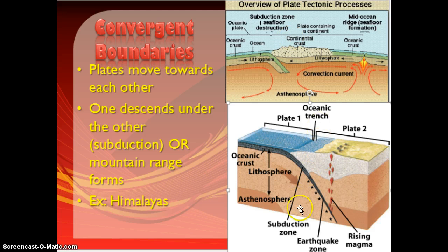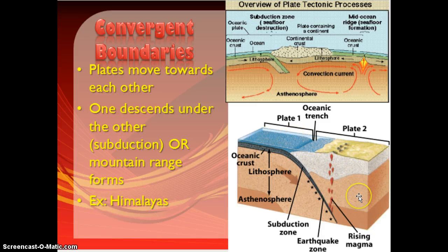Even at subduction zones, you still usually have mountain ranges pop up. You see this in places like the west coast of North America, where you have the Cascade Mountains along the California coast, and then a subduction zone right off of the coast.